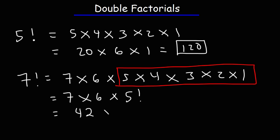7 times 6 is 42, and we know that 5 factorial is 120. So multiplying 42 by 120 gives us the value of 7 factorial, which is 5,040.